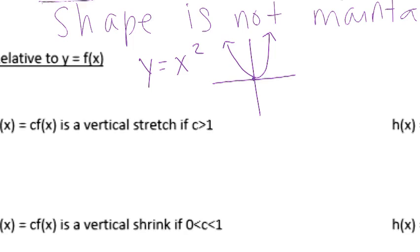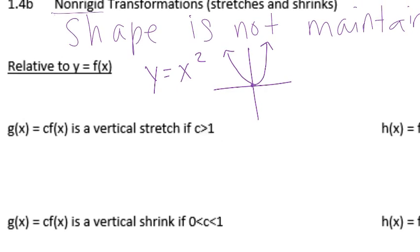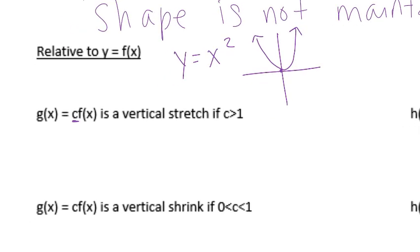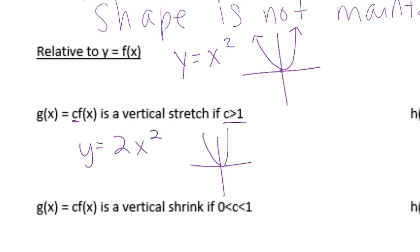We're going to look at a number in front of our function. We're going to say that c is greater than 1. So if I say y equals 2x squared, that is going to be a vertical stretch. Another way of describing that is it's going to get skinnier. Vertical stretch means pulling the top and bottom vertically, which actually makes it skinnier or narrower.